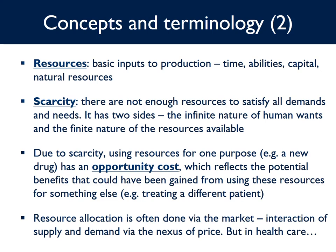Resources are basically anything used to produce goods and services — including time, labour, knowledge, ability, capital, and natural resources. Scarcity arises because there aren't enough resources to satisfy the infinite demands in a society. Hence choices have to be made. Scarcity means that when you use resources for one purpose — for example, the purchase of an expensive new drug — it may have an opportunity cost in that those resources can't be allocated somewhere else. The fundamental economic problem is the allocation of scarce resources, often done by the market, but in healthcare, markets often fail.